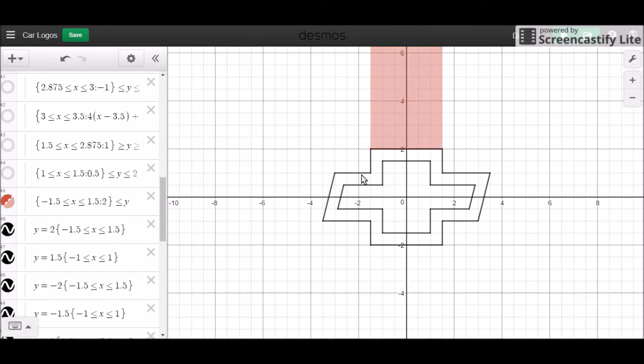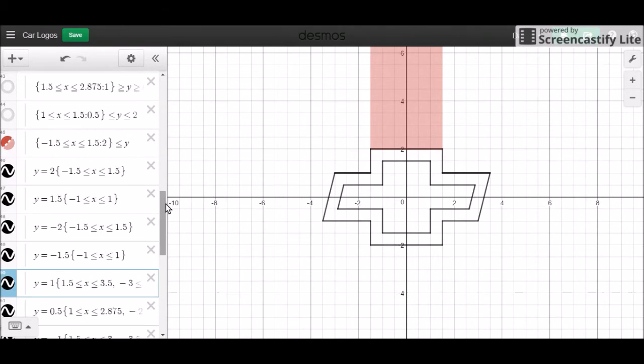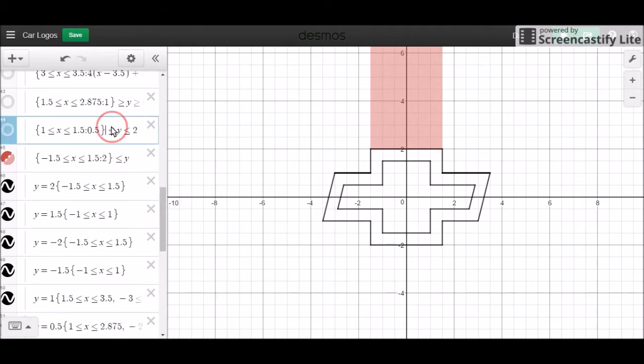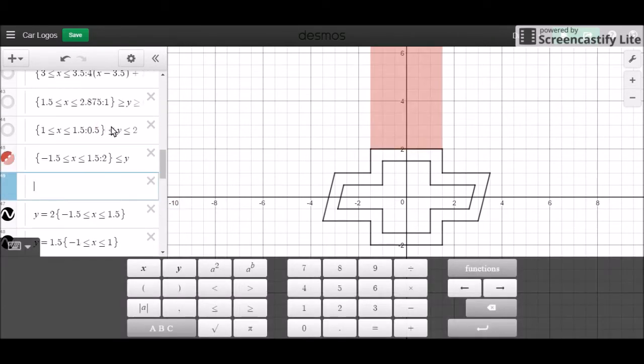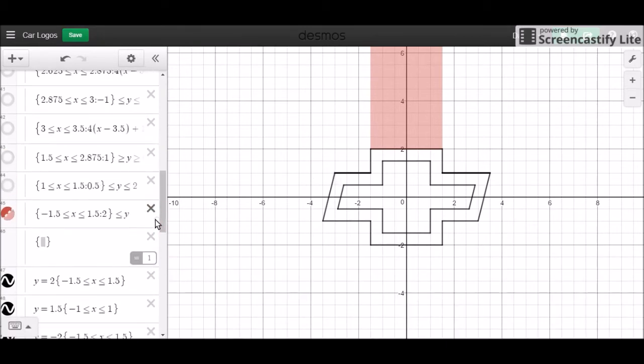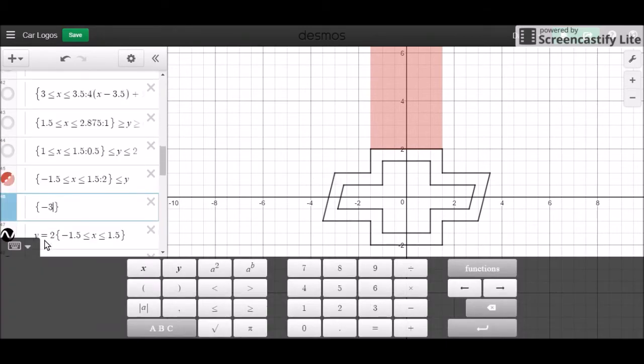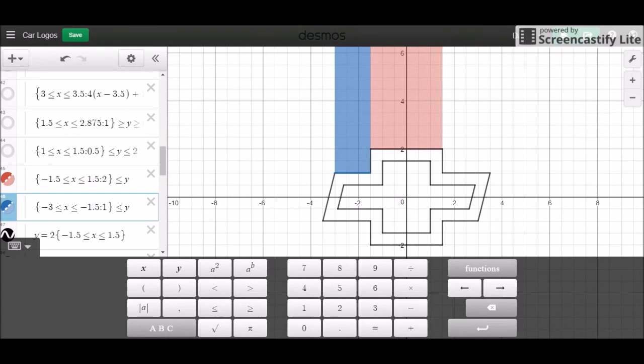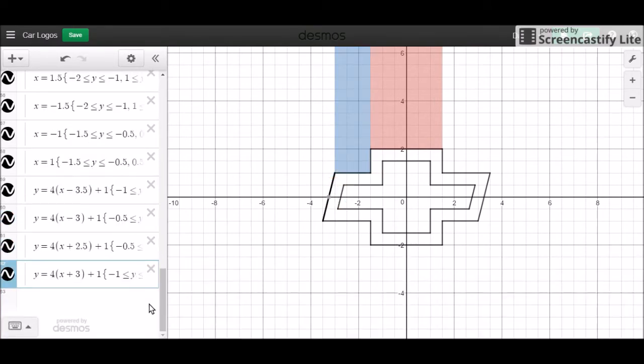So we're going to do the same thing with this one. With this one, the bounds are... let's see, the bounds are negative 3 to negative 1.5. So it's negative 3 to negative 1.5. That 1 is going to be less than or equal to y. So for this one, we do the same thing.